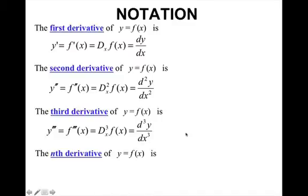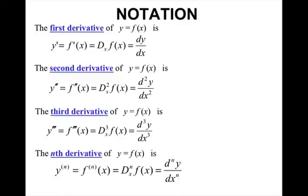We can also find anything after the third derivative — fourth derivative, fifth derivative, and so on — which will be written as y to whatever derivative, or f to whatever derivative, and so on. The only ones that get the tick marks are the first, second, and third derivatives.